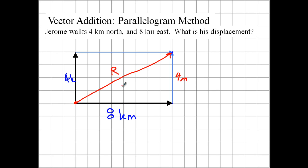And now we can find the resultant — pretty easy using the Pythagorean Theorem. So R is going to be the square root of 8 squared plus 4 squared. We're not going to do the math here.